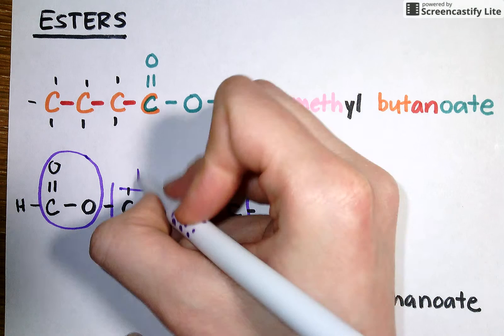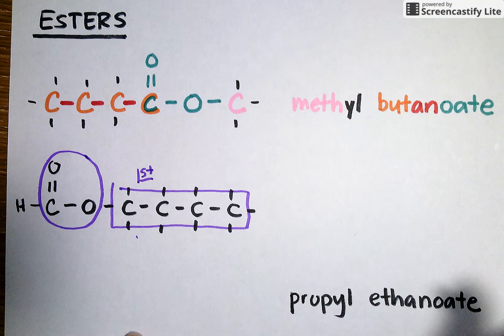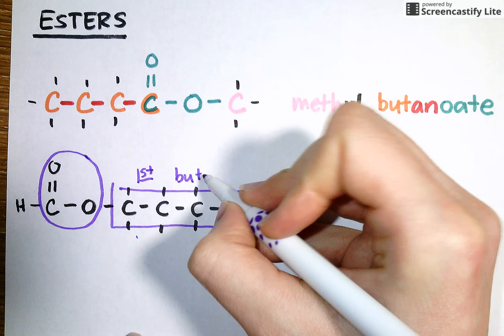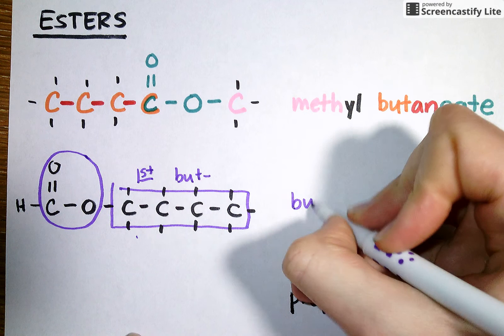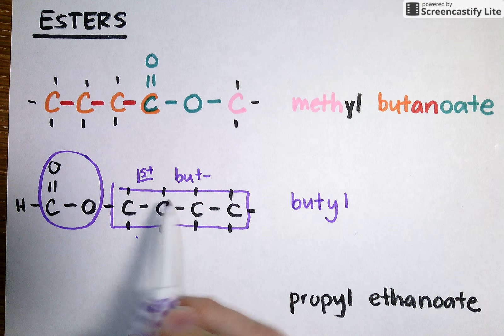I see that there are four carbons, so I'm going to use the prefix but. So let's make the first part of our name butyl to show that it's a four carbon attachment to the functional group.